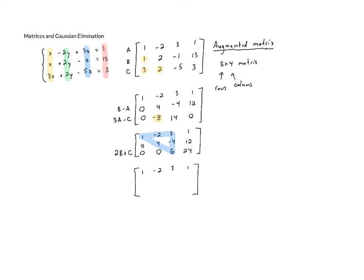So we're not going to do anything to the first row. The first row is fine. The second row, B, we're going to divide by 4. And then we divide row B by 4, we get 0, 1, negative 1, and 3. When we take the third row, row C, and divide it by 6, we get 0, 0, 1, and 4.